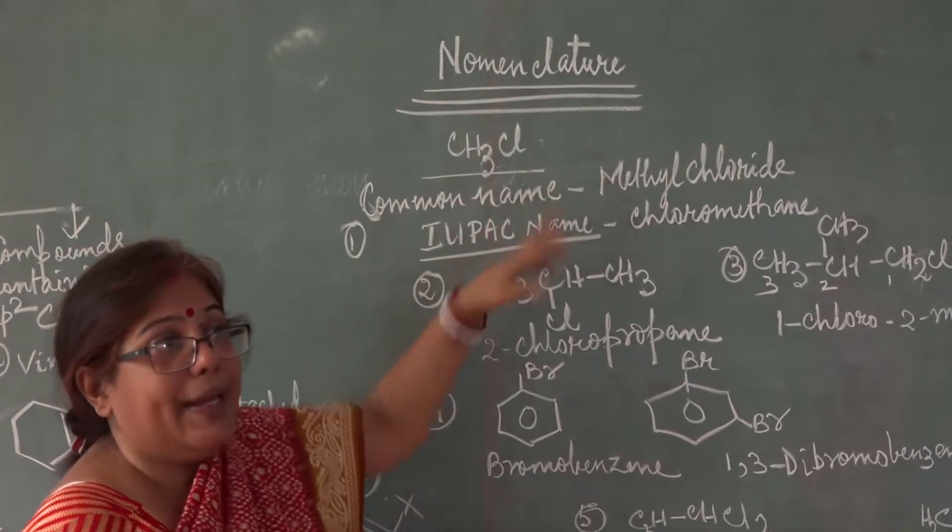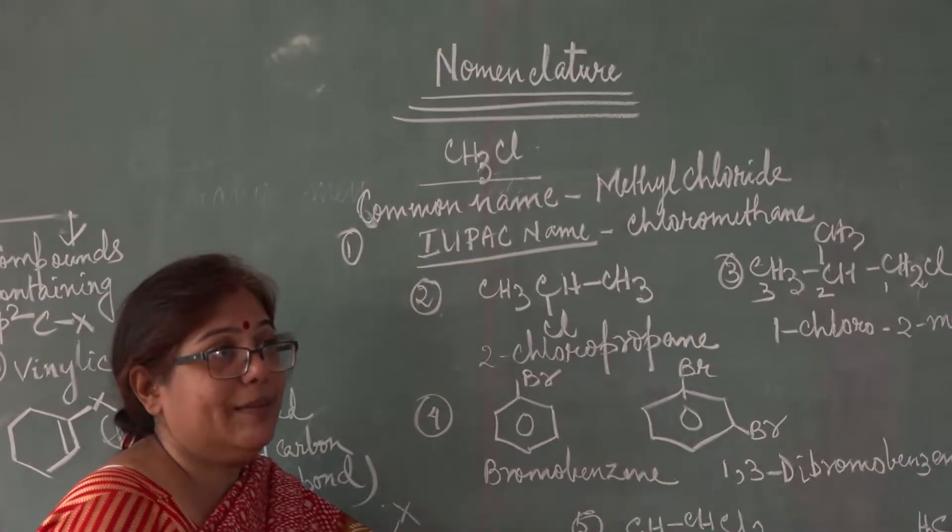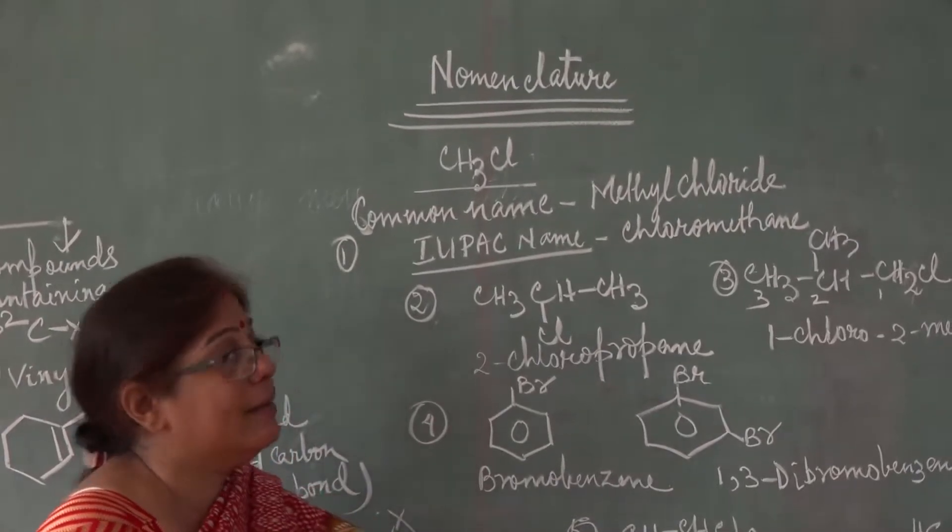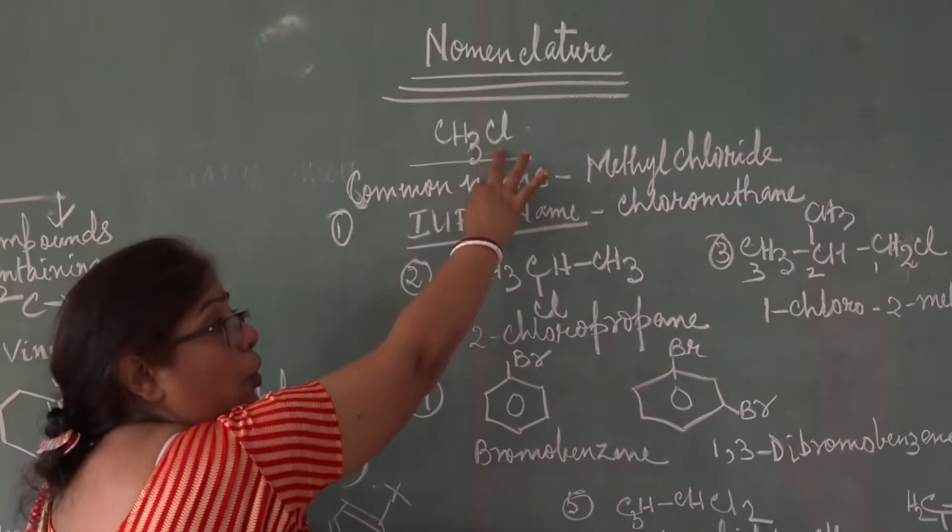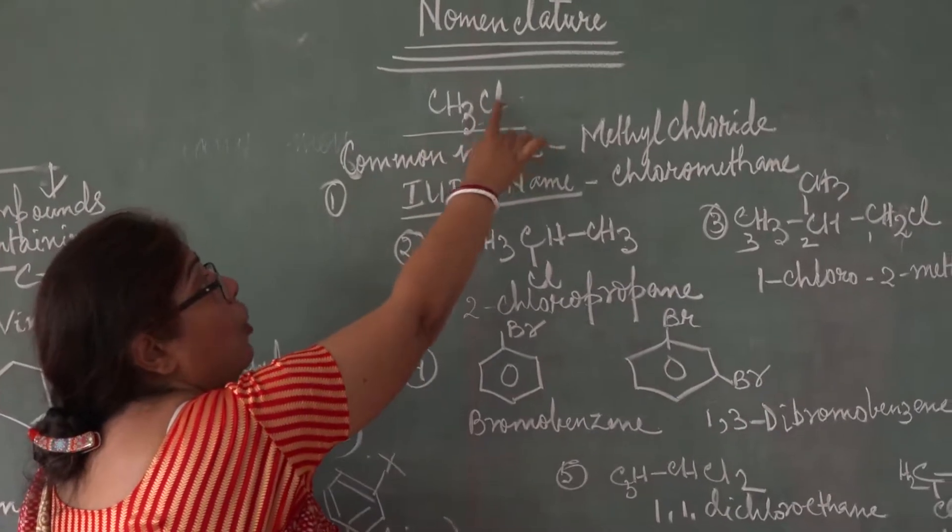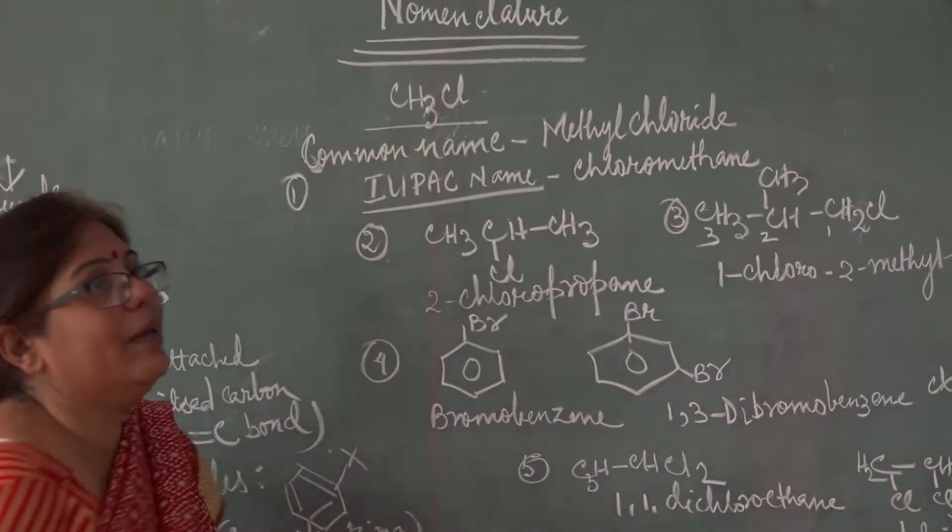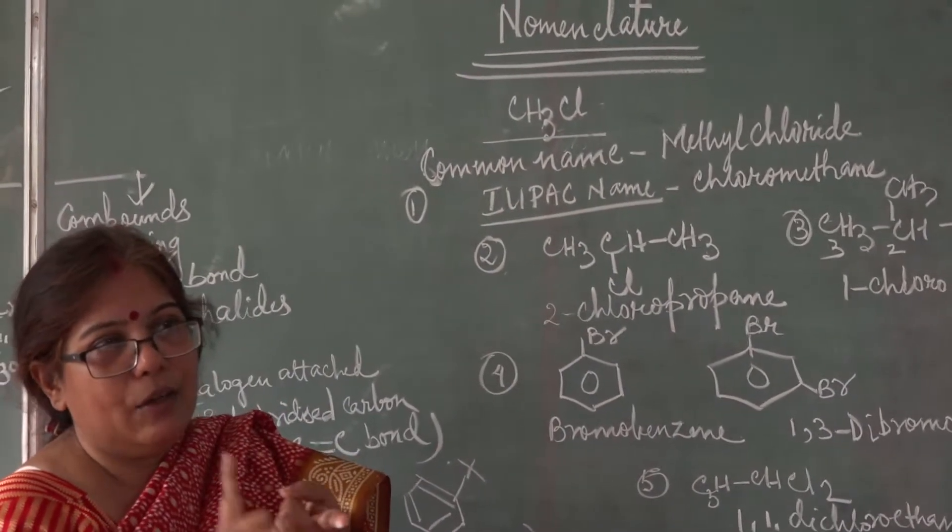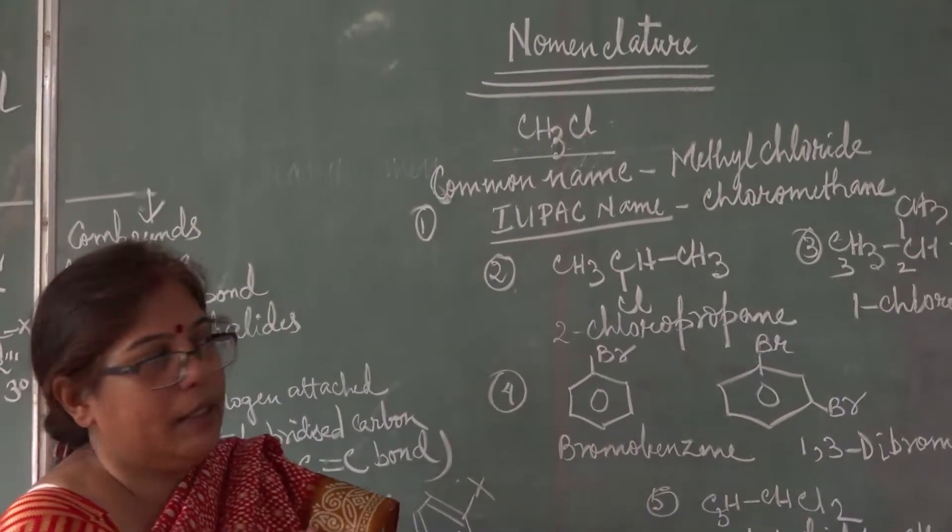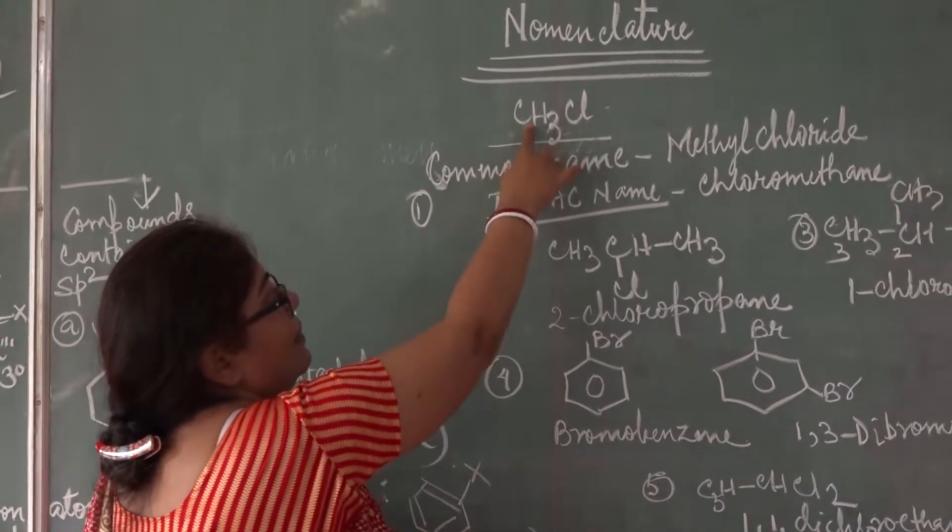Methylchloride. An IUPAC name which is a scientific nomenclature in methods. It is chloromethane. Haloalkane. Halo stands for halogens. Halogens are chlorine, bromine, iodine. So haloalkanes. See here.